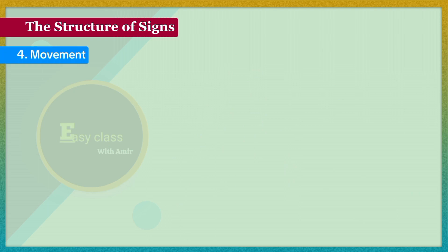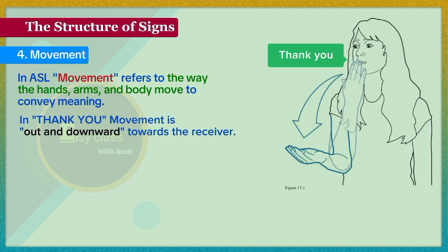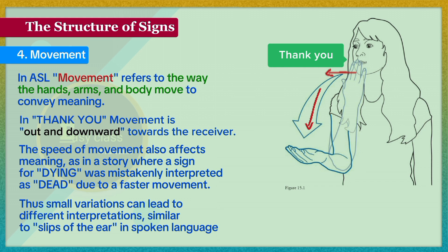In ASL, movement refers to the way the hands, arms, and body move to convey meaning. In the sign for 'thank you,' the movement is out and downward towards the receiver. The speed of movement also affects meaning, as demonstrated by a story where a sign for 'dying' was mistakenly interpreted as 'dead' due to a faster movement. Thus, small variations can lead to different interpretations, similar to slips of the ear in spoken language.